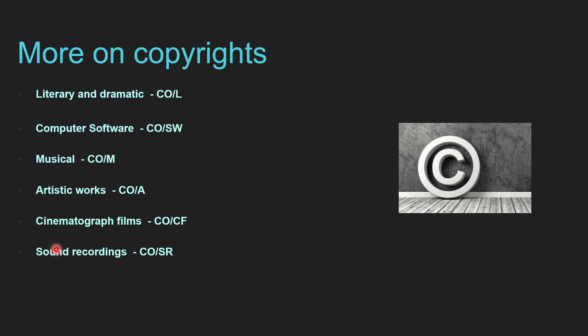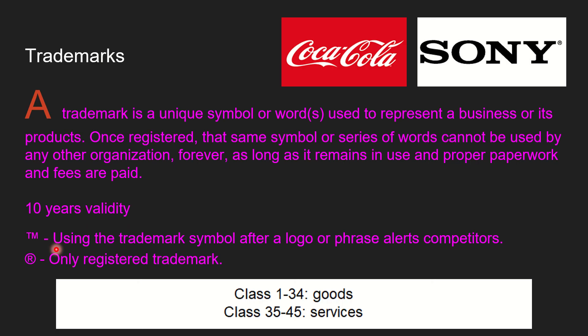The next thing is trademarks. It is the logo, the unique symbol, or some words and captions used to represent a business or a product. Once registered, the same symbol, words, or sequence cannot be used by other organizations — it belongs entirely to the organization that created it. The validity for a trademark is 10 years.